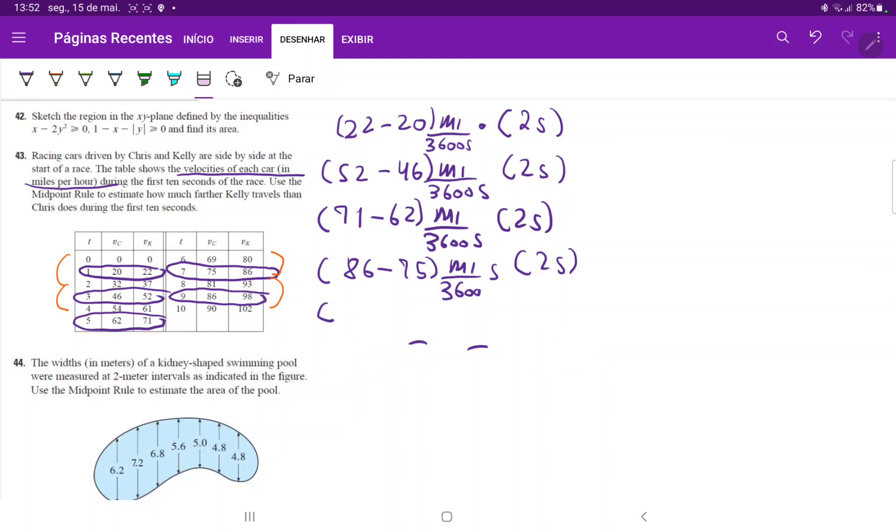And then lastly, we have 98 minus 86, mile per 3,600 seconds times 2 seconds. So all we did here was really just, we're summing up our delta V times our delta T's, evaluated at our midpoint, and we're summing up this five times.